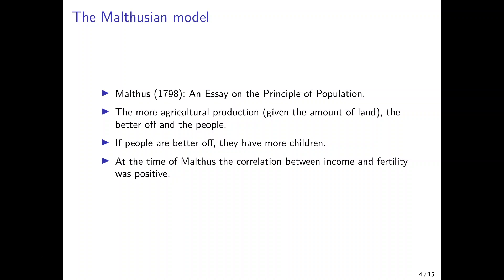The prediction of Thomas Malthus was that whenever incomes would rise, this is counteracted by an increase in population growth, and we will never be able to observe persistent increases in living standards. And that is also the reason why economics is often called the dismal science.